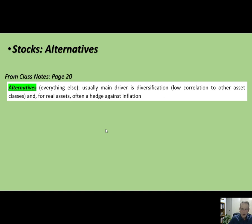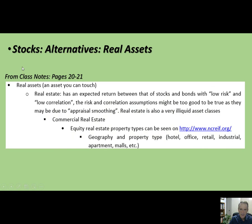Real assets include real estate and commodities like oil, concrete, copper — they tend to do well when inflationary pressures are there, and especially gold does extremely well with inflation. Real assets can be a good protection against inflation. These tend to be fairly illiquid assets, so they better have strong characteristics to offset that. Let's talk about real assets first — jumping to pages 20 and 21, let's start with real estate.